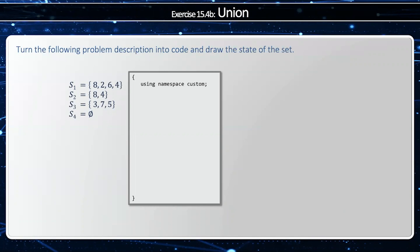Now, notice how I'm saying using namespace custom. In other words, the standard template library's version of the set does not have a union. So I have to use my own implementation, which will implement the or operator. So I'm going to say S1 equals initialization list, 6, 8, 4, 2.